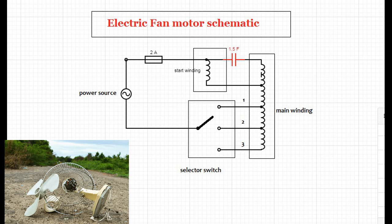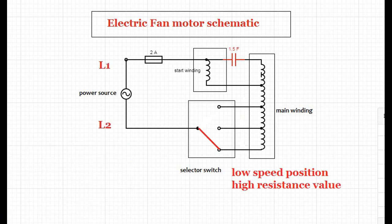Multi-speed in a permanent split capacitor motor is achieved by changing the winding resistance. If high speed is required, the terminal is connected to the least winding resistance. If low speed is required, the terminal is connected to the highest winding resistance.